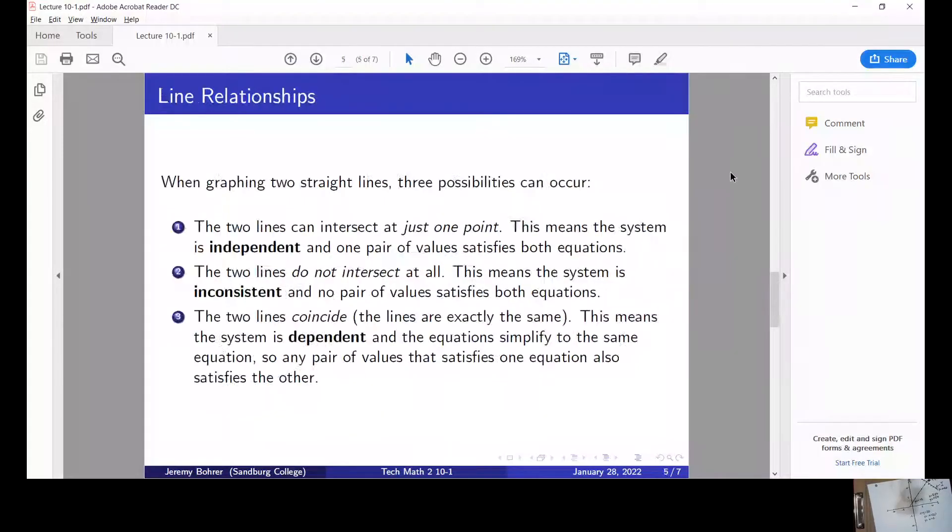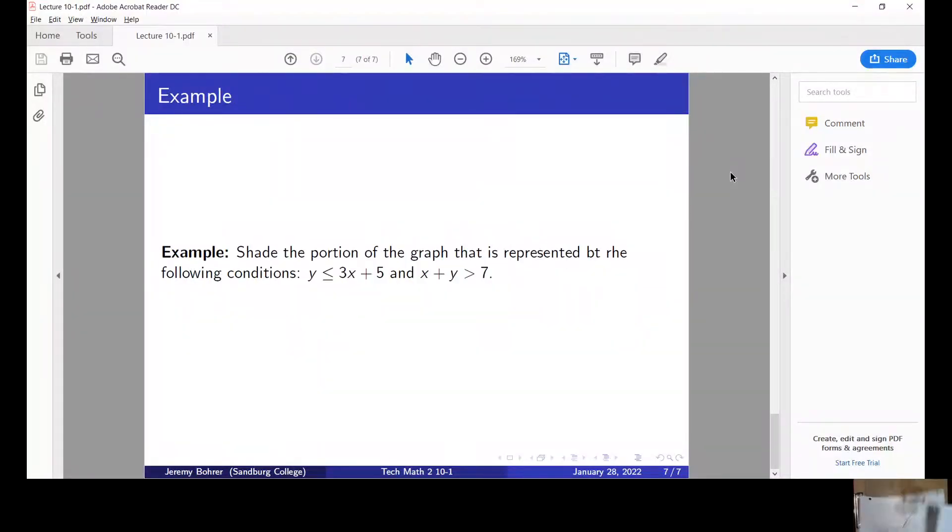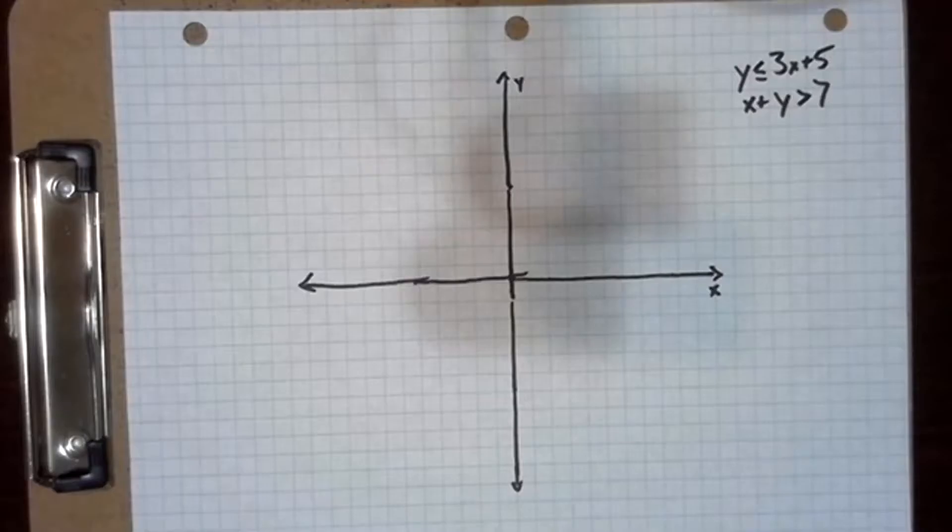And this other problem is an inequality problem. In this problem we're asked to shade the portion of the graph that is represented by the following conditions: y is less than or equal to 3x plus 5 and x plus y is greater than 7. So we come back over here and this equation y is less than or equal to 3x plus 5 is pretty easy to work with.